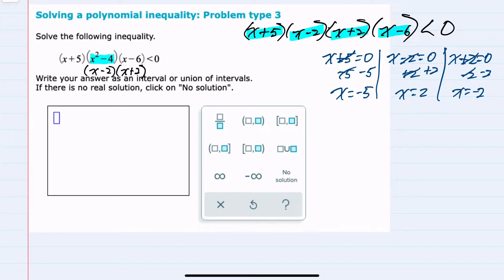And then our last factor, x minus 6, setting that equal to zero, I would add the 6 over to isolate the x, giving me x equals a positive 6. We have four points of interest here.